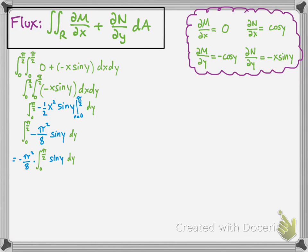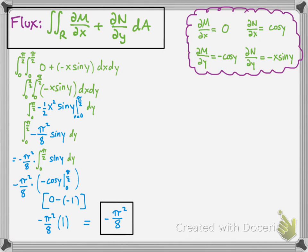Then, you take the antiderivative again. But, first, I brought out the constant to make it easier to simplify. You don't have to do it, but I prefer to. And then, the antiderivative of sine y is negative cosine y. And then, you're evaluating that from 0 to pi over 2. And then, multiply that by the constant. And, using the fundamental theorem of calculus, you get 0 minus negative 1, which is simply 1. And, 1 times negative pi squared over 8 is simply negative pi squared over 8.